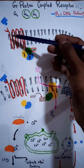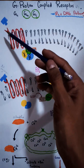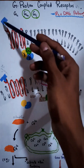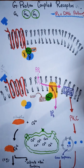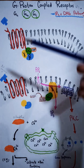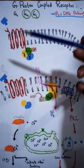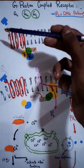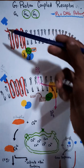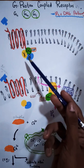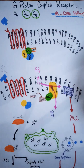The outer side of this receptor will have a binding site for the ligand. This ligand can be a drug, a hormone, a neurotransmitter, or anything. The response will be initiated when this ligand binds with the binding site, and then the G protein will help in the initiation of the response.